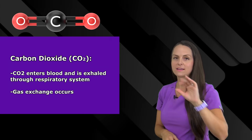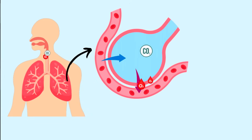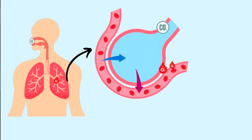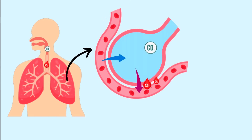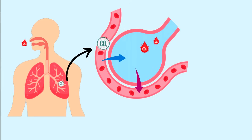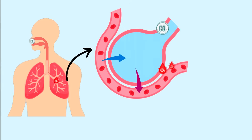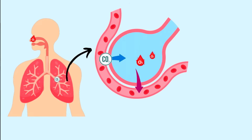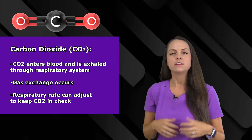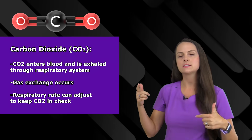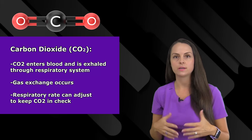It's really cool how gas exchange works — whenever you're breathing in, you're breathing in oxygen. That oxygen goes in through your nose, down into your lungs, crosses over into the alveolar sacs, and goes into your blood, which then replenishes all your organs with oxygen. That waste product, carbon dioxide, crosses over and goes through the alveolar sac and up through your lungs and you exhale it. Your respiratory rate can adjust itself — it can increase or decrease its rate depending on how much CO2 it needs to get rid of.